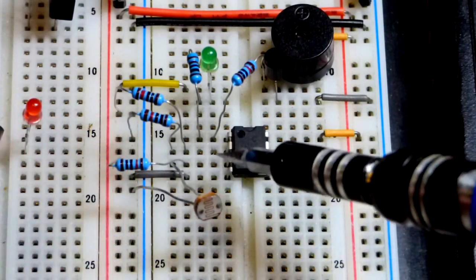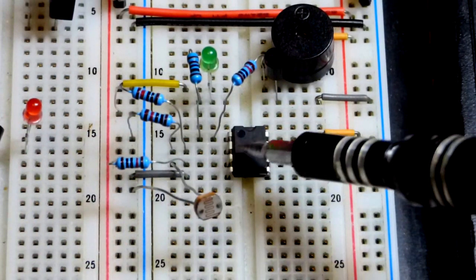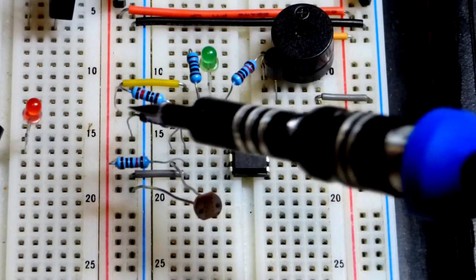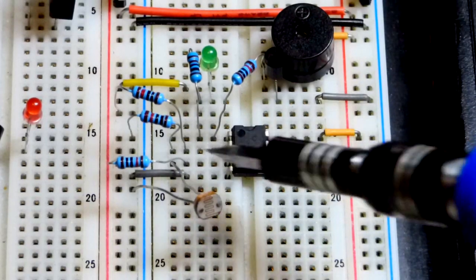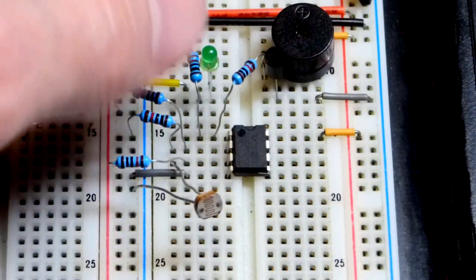And we have at the inverting input, 10 kilo ohm to negative rail, 10 kilo ohm to positive rail right there. So that would give us 2.5 volts out of 5.